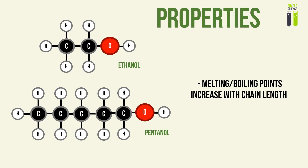Now let's look at the properties of alcohols. Very similar to any other member of the homologous series, the melting point and boiling point of an alcohol increases with chain length. This is due to van der Waals forces, which increase the melting and boiling point depending on molecular mass. For the IGCSE syllabus, you should know that the melting point and boiling point of an alcohol increases with chain length.